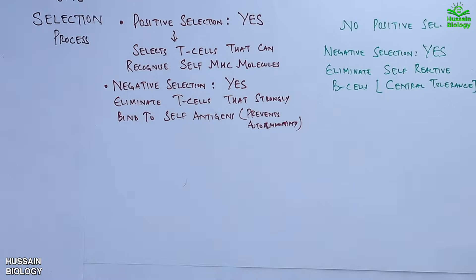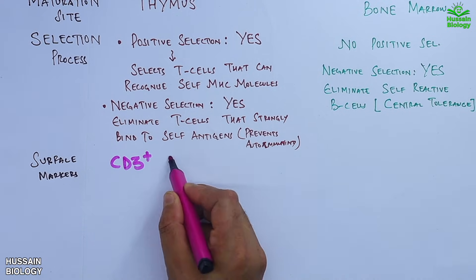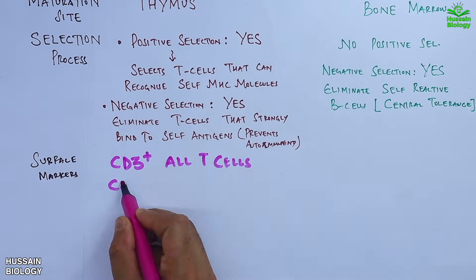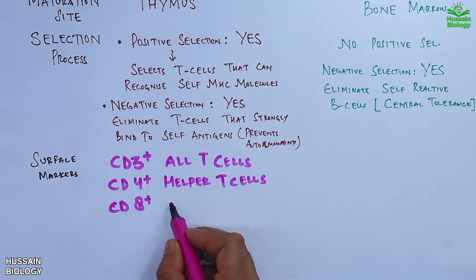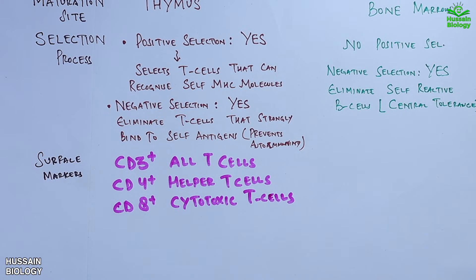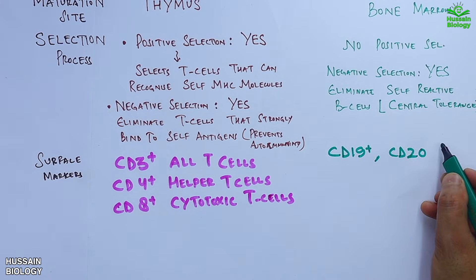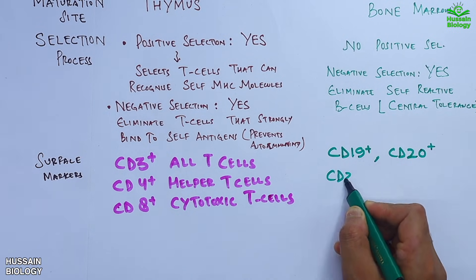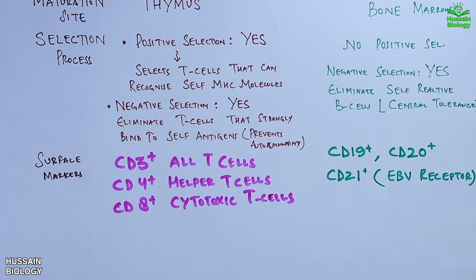Now let's see the surface markers on both cells. On T-cells we have CD3+, present on all T-cells; CD4+ marks helper T-cells; CD8+ marks cytotoxic T-cells. On B-cells we have CD19+, CD20+ which is the classic B-cell marker, and CD21+ which acts as the EBV receptor.